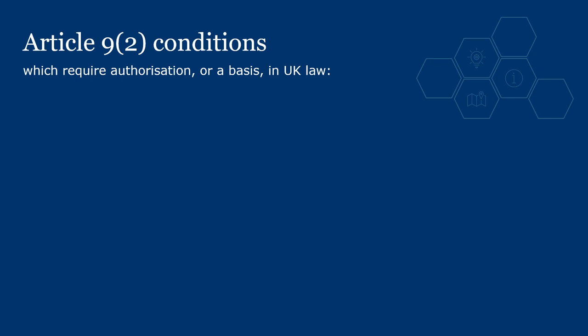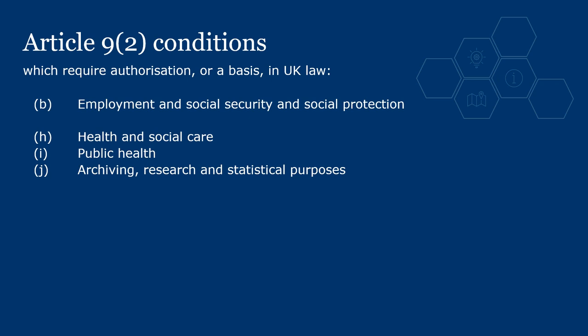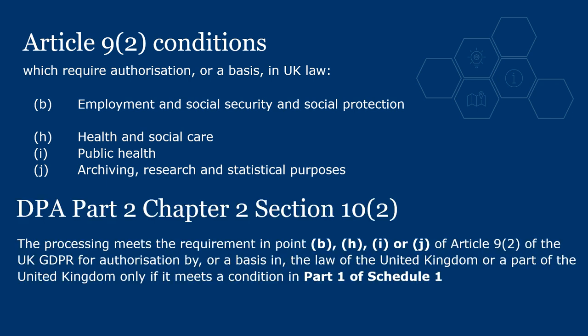We have now looked at four of the Article 9 conditions which require authorisation or a basis in UK law — conditions B, H, I and J. We looked at DPA Part 1 Schedule 1 where we found a corresponding paragraph for each. It was Section 10 of the DPA which told us these conditions were in Part 1 of Schedule 1. But remember, this list does not include the fifth condition, G — substantial public interest — so let's now look at this.